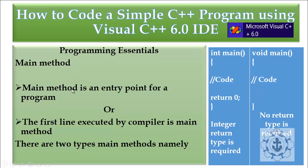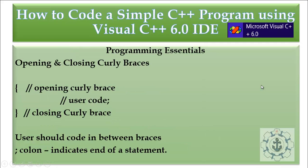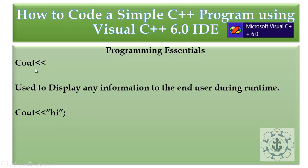The main method is an entry point for the program — the first line executed by the compiler is the main method. There are two types: integer main or void main. All user code should be placed between the opening and closing curly braces. A semicolon indicates the end of a statement. The cout statement is used to display any information to the end user during runtime.